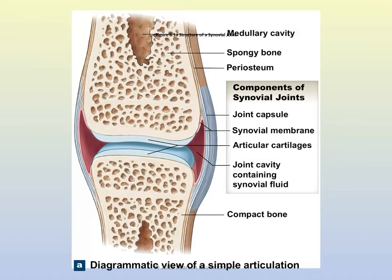Looking at a generic synovial joint, notice the joint capsule. The capsule is made of fibrous connective tissue — the periosteum on one bone continues on and forms the joint capsule, then becomes the periosteum of the next bone. That is the outer layer of the joint capsule. The inside of the joint capsule is the synovial membrane, which lines the entire cavity and secretes synovial fluid.